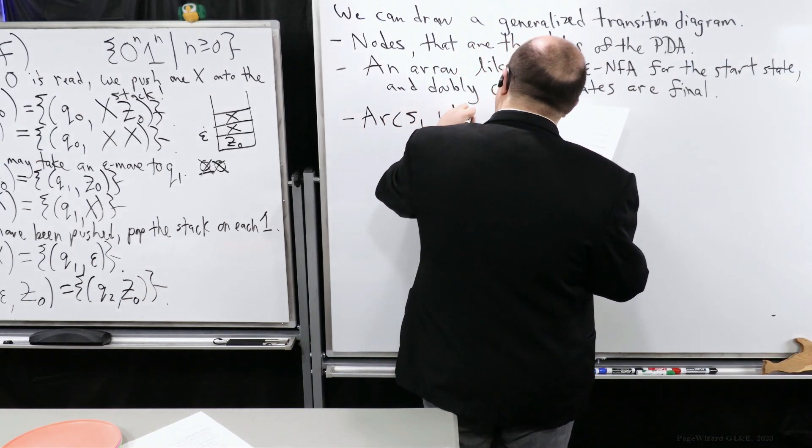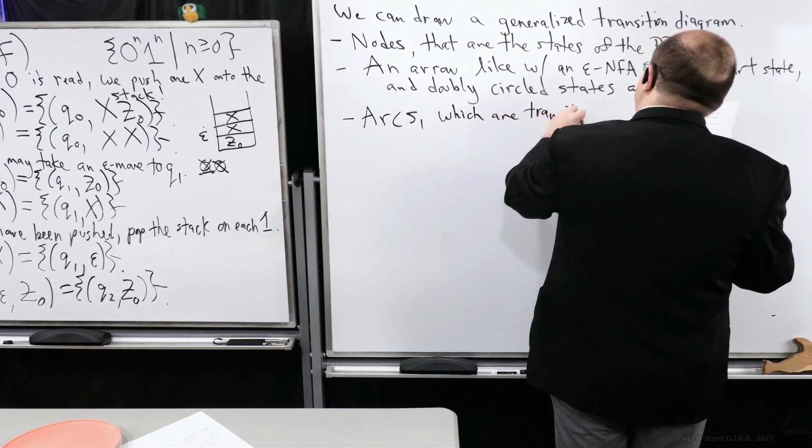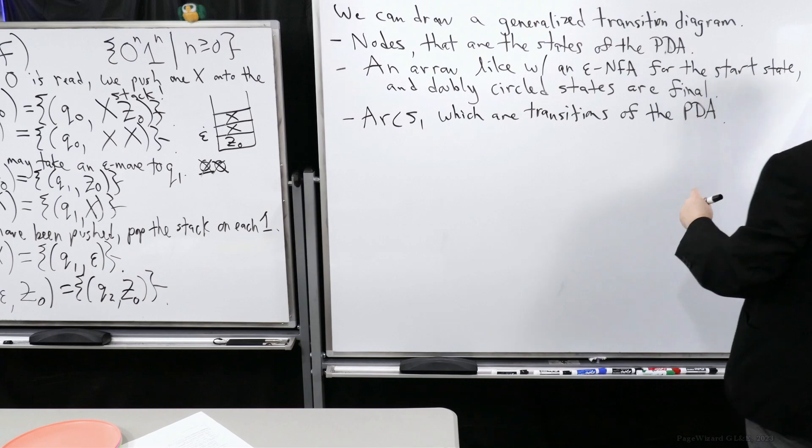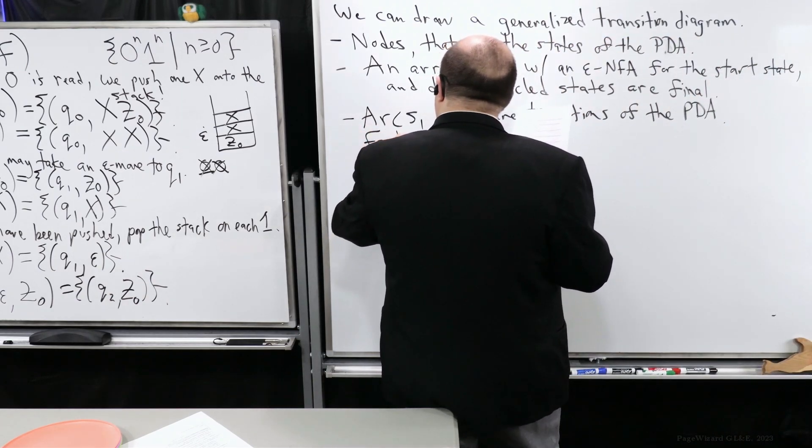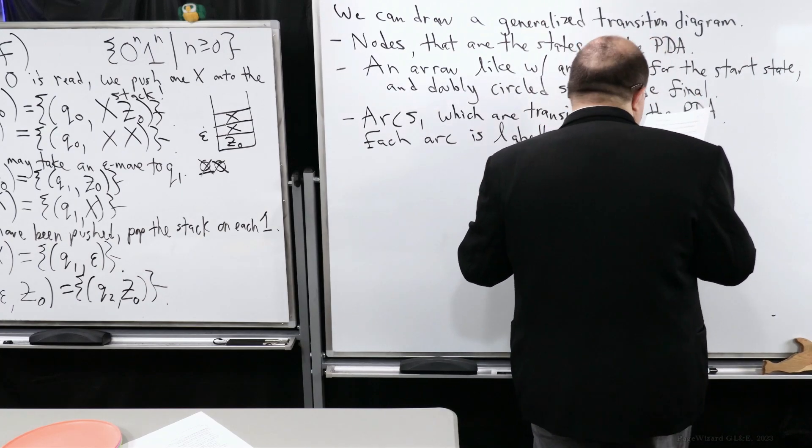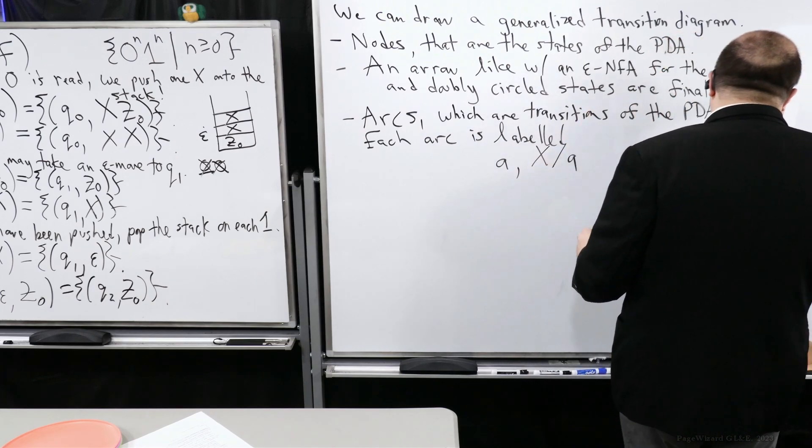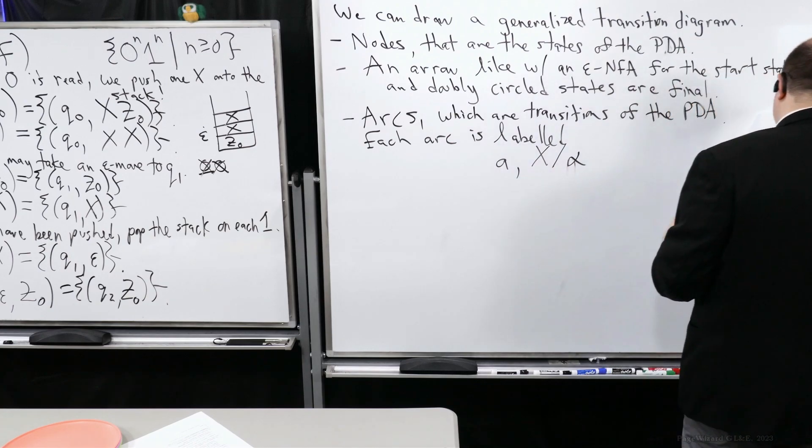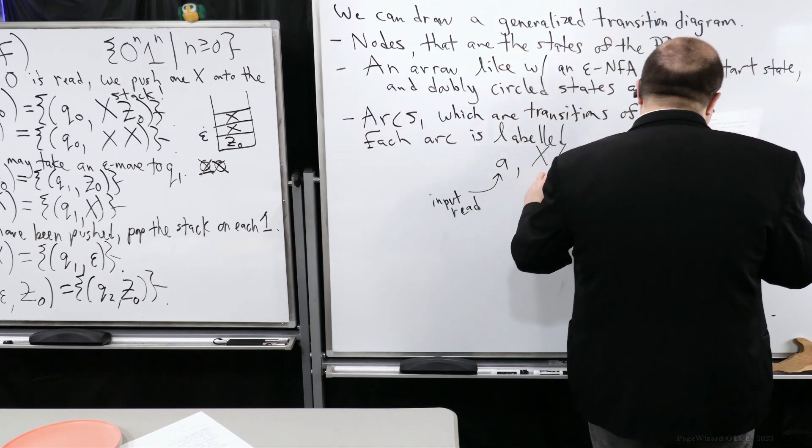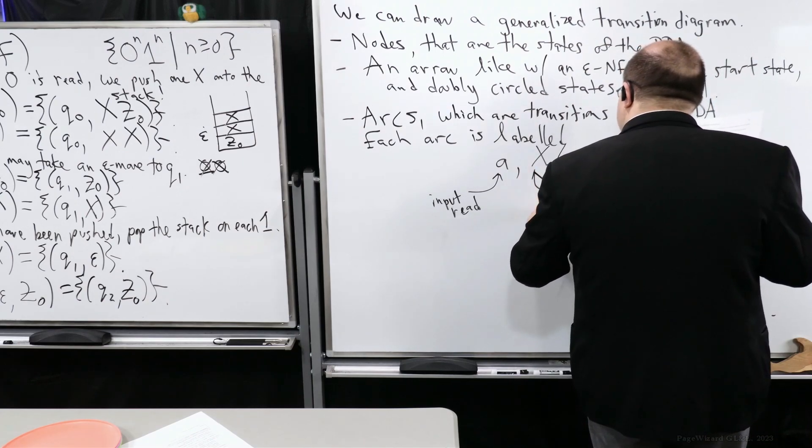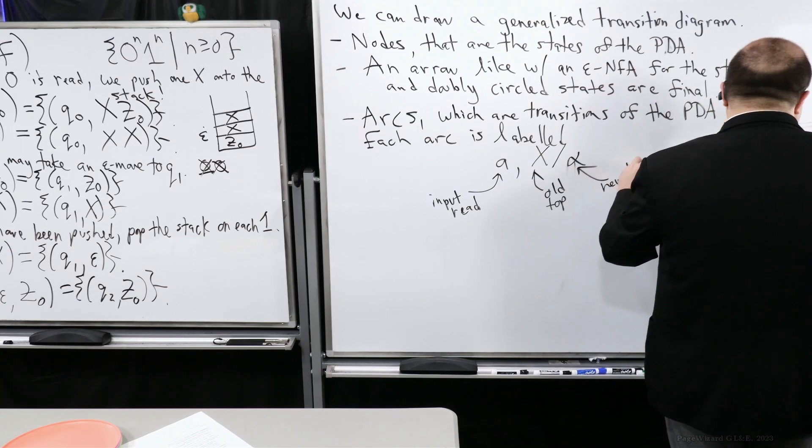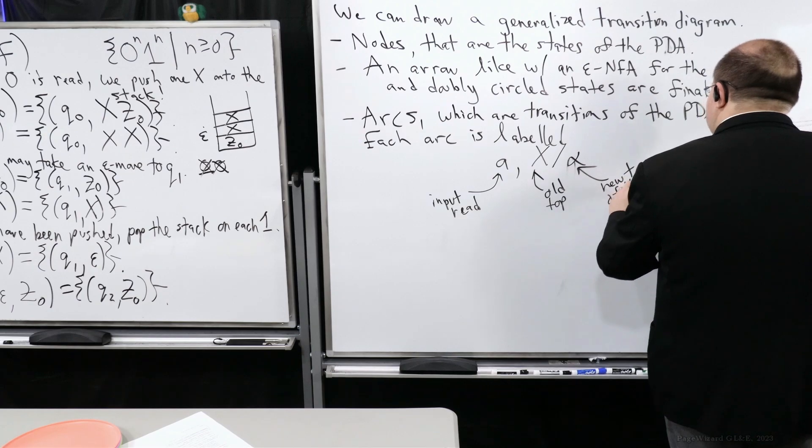So we're going to have arcs, which are transitions of the PDA. So we're going to have directed edges. So I'm going to label them with a very specific form. Each arc is labeled. It's going to have this particular form. It's going to be A, we're going to have X with a slash. And instead of this being A, let's make this alpha. So you might ask what A is. This is the input red. X is the old top of the stack. And alpha is the new top of the stack. So this is what you're replacing with.